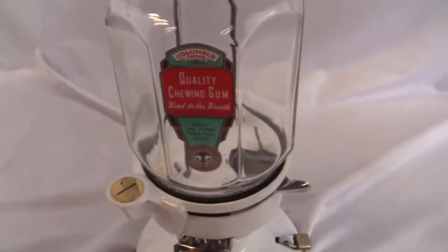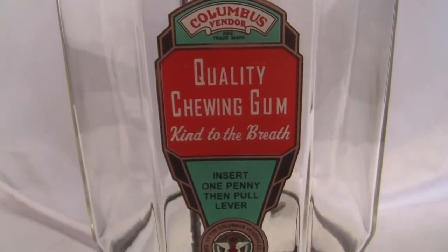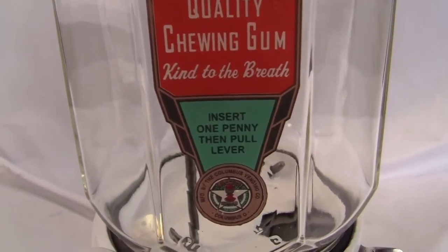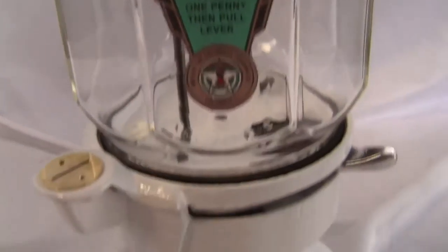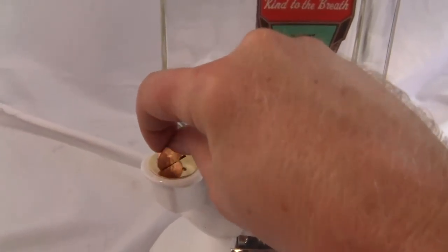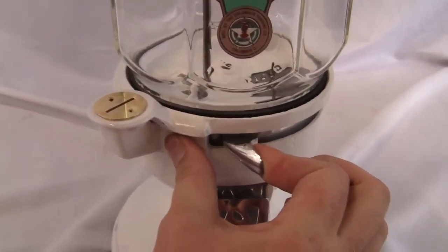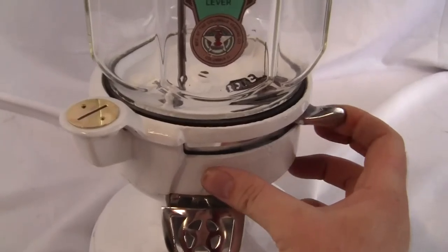Machine works beautifully, has a new decal in the original globe. It says quality chewing gum, kind to the breath, insert one penny then pull lever. So what you're going to do is take a penny, stick it in the slot right there and pull from back to front and release and it goes back into position.